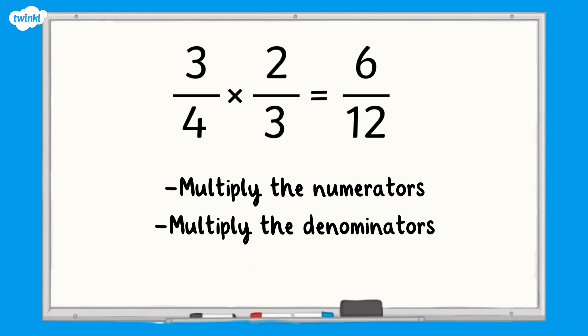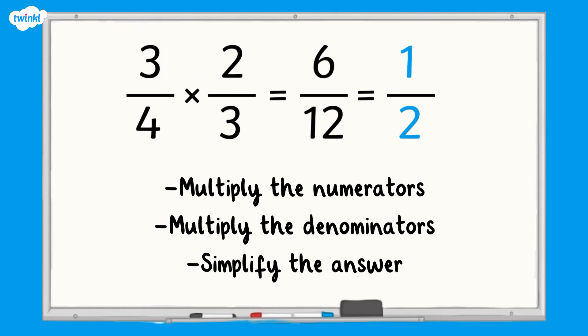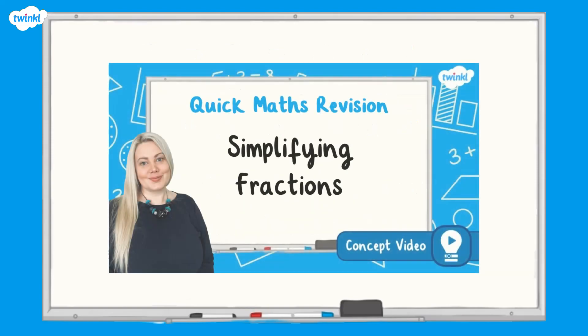Finally, we need to check if we can simplify our answer. Six twelfths can be simplified to one half, so three quarters multiplied by two thirds equals one half. If you need a reminder about simplifying fractions, you can watch the simplifying fractions video to help.